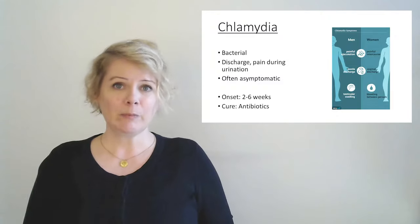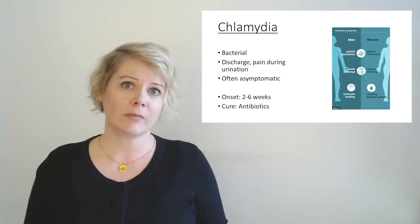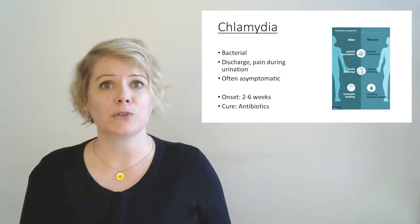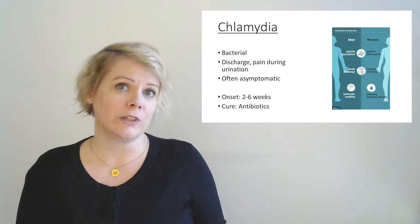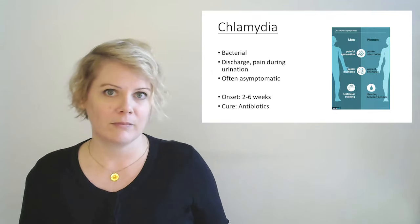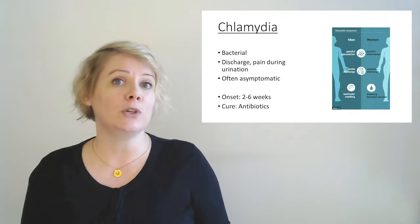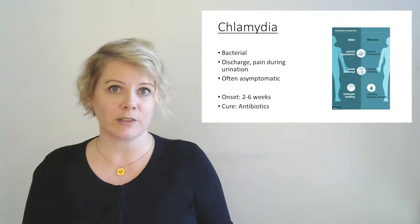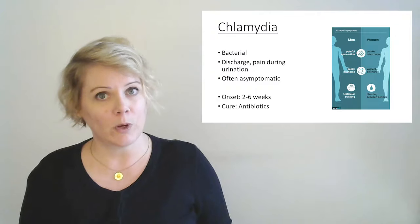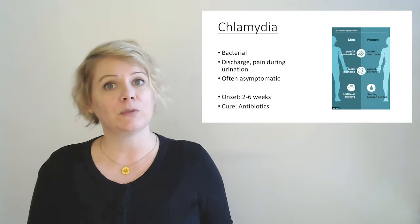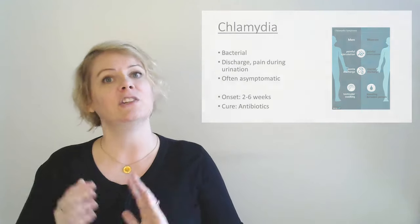Next, chlamydia. So chlamydia, also a bacterial infection, also curable with penicillin. Chlamydia also has a long social history. And it also typically manifests as discharge or pain during urination or sex. So again, this is why it's important to get checked pretty regularly, because this one can show up two to six weeks after contraction. Another thing that's important about chlamydia is that people are often asymptomatic, especially women. So women can be carriers of chlamydia and not know it for months, maybe even years. So again, get checked regularly.